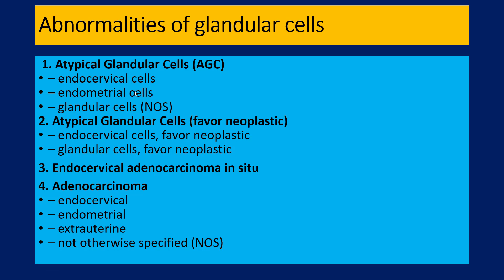Group three is something which we call endocervical adenocarcinoma in situ. And group four is adenocarcinoma. When it comes to atypical glandular cells, we might say that these are atypical glandular cells of endocervical cell type, endometrial cell type, or atypical glandular cells where we do not want to commit as to the exact origin — whether endocervical, endometrial, or otherwise. We are not committing to whether they are neoplastic or not. There is nothing called atypical endometrial cell favor neoplastic — it is atypical glandular cells of endocervical or not otherwise specified, favor neoplastic.